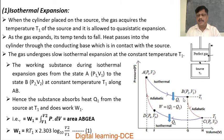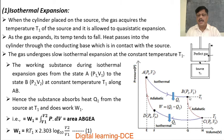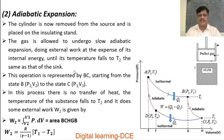The area under the PV diagram gives the work done. The area under curve AB gives the work done during isothermal expansion. That is, work done W1 is equal to the integral from V1 to V2 of P dV, equal to area ABGEA. This is given by W1 = RT1 × 2.303 log(V2/V1), which is expression 1.